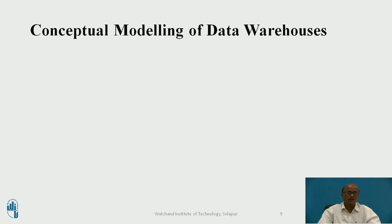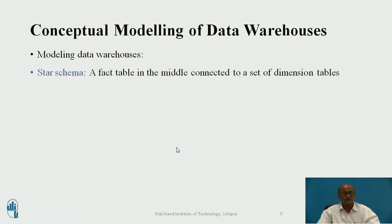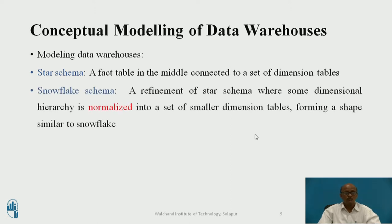Now, conceptual modeling of the data warehouse. There are three types of modeling: the first is star schema — a fact table in the middle connected to a set of dimensional tables. The second is snowflake schema — a refinement of star schema where some dimensional hierarchy is normalized into smaller dimensional tables forming a shape similar to a snowflake. We will look at the diagram to explain these.